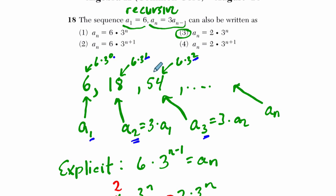And I encourage you, plug in values of n. If you plug in one, two, or three, you should get 6, 18, and 54. You'll see that this formula does work. All right, I hope that helps.